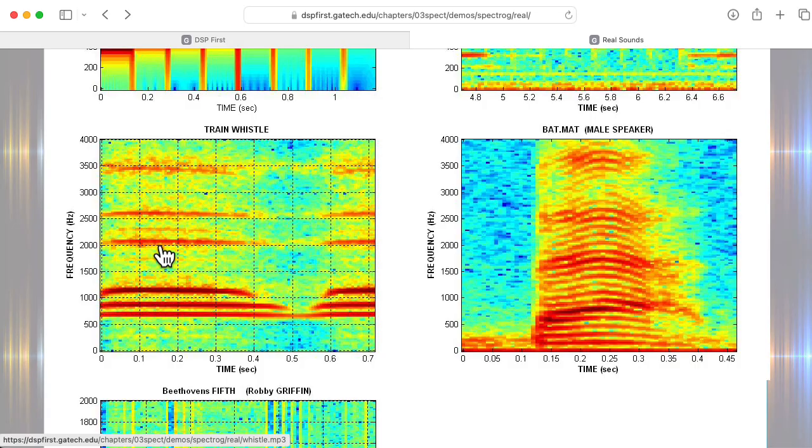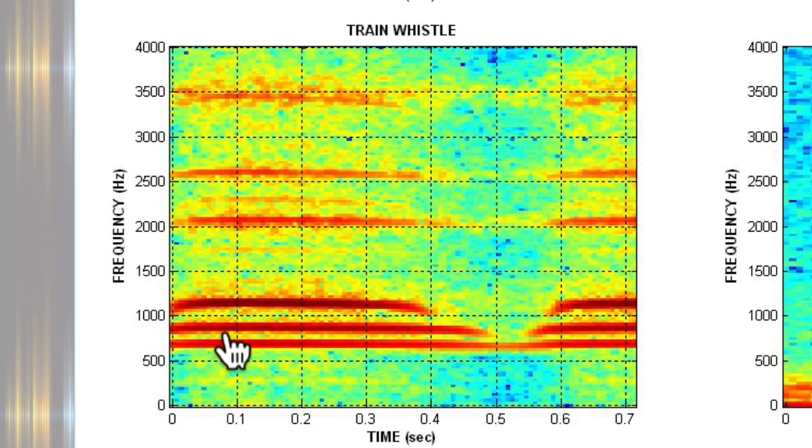Here's a train whistle. Notice that the overtones of a train whistle are distinctly not a nice harmonic series. A train whistle is specifically designed to be annoying.